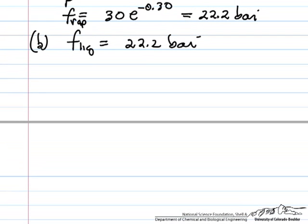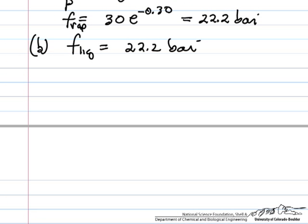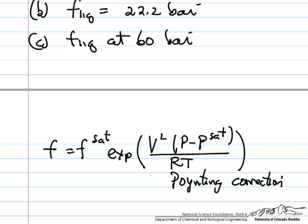And now for part C, we want the fugacity of the liquid at 60 bar. So what I've written down here is the Poynting correction that relates the fugacity of a liquid at some pressure to the fugacity at saturation pressure, which is of course what we have already.